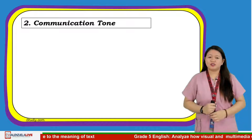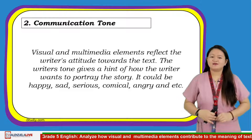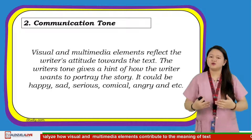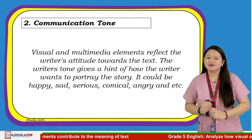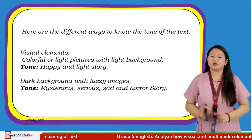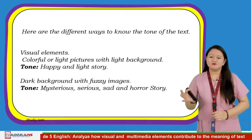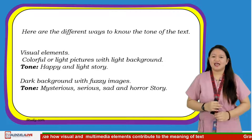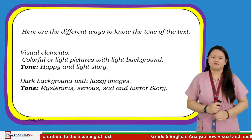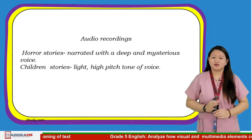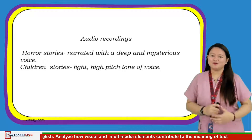Number two: communication tone. Visual and multimedia elements reflect the writer's attitude toward the text. The writer's tone gives a hint of how the writers want to portray the story — it could be happy, sad, serious, comical, angry, and so on. Here are different ways to know the tone of the text. In visual elements, colorful and light pictures with a light background mean the tone is happy and light. If it has a dark background and fuzzy images, the tone is mysterious, serious, or a horror story. In audio recordings, a horror story is narrated with a deep and mysterious voice, while a children's story uses a slight, high-pitched tone of voice.